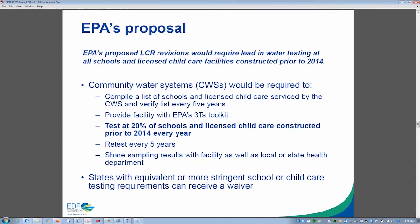Under EPA's proposed revisions, for the first time all schools and licensed childcare facilities constructed prior to 2014 will have their water tested for lead. The water utility would compile a list of schools and licensed childcare facilities they service, verify that list every five years, provide the facility with EPA's 3Ts toolkit as an educational resource, and test at 20% of facilities every year until all are tested within five years, repeating the cycle. Results must be provided to the facility and the local or state health department.